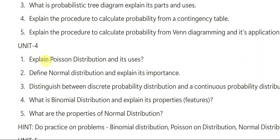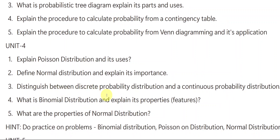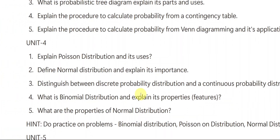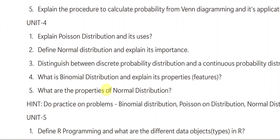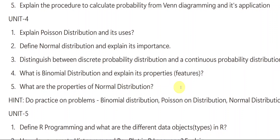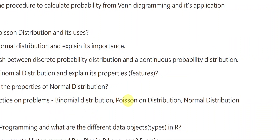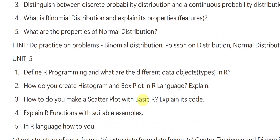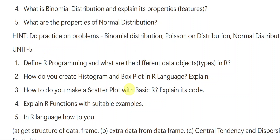From unit number four: Explain Poisson's distribution and its uses. Define normal distribution and explain its importance. Explain the differences between discrete probability distribution and continuous probability distribution. What is binomial distribution and explain its properties or features? What are the properties of normal distribution? Make sure you practice problems on binomial distribution, Poisson distribution, and normal distribution — I am specially mentioning this.